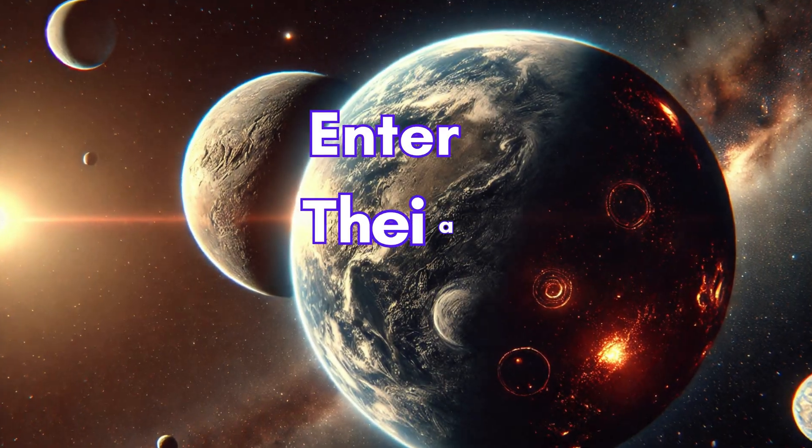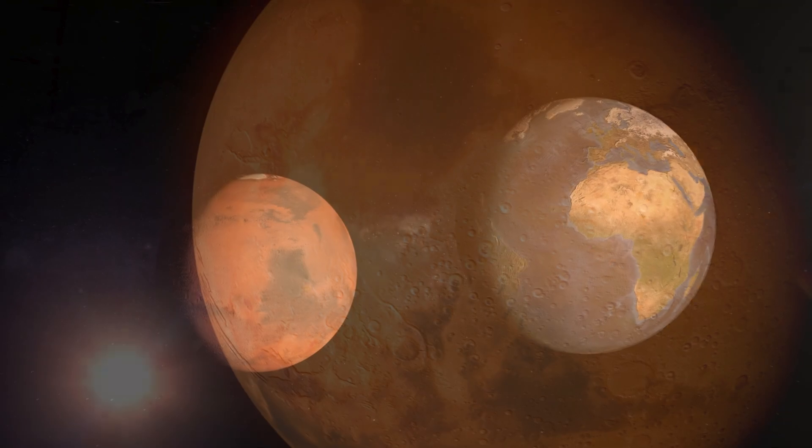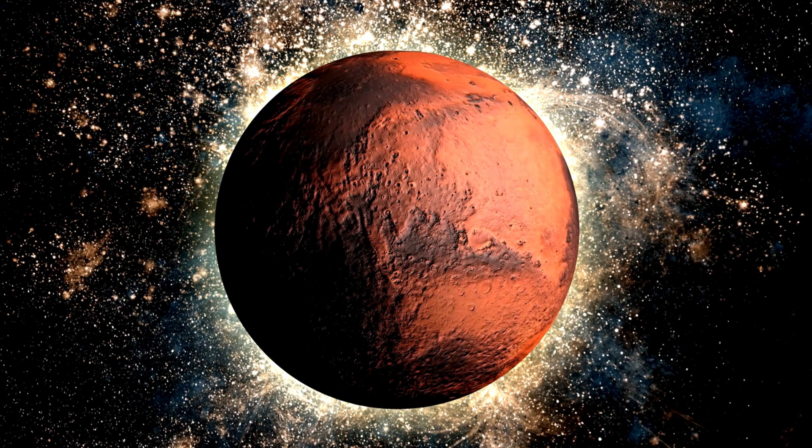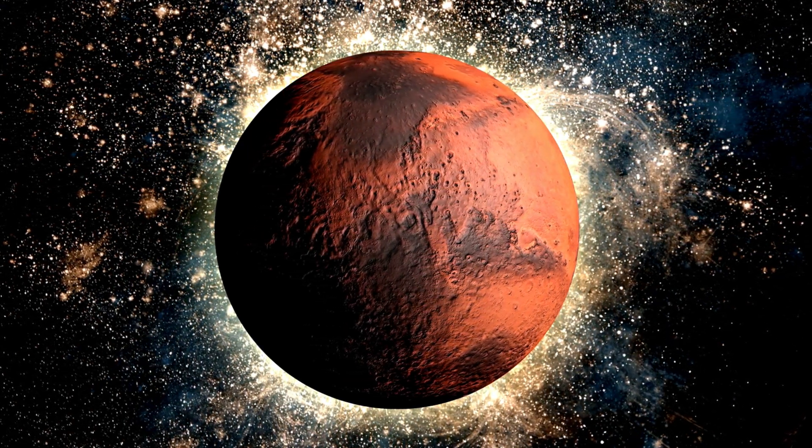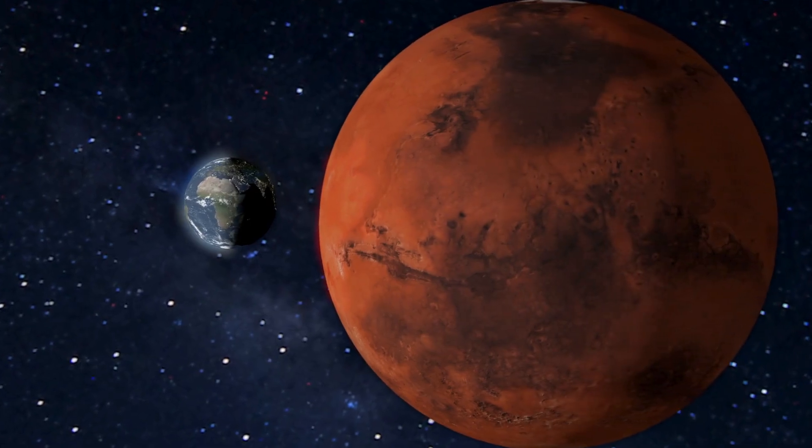Enter Theia. The rogue planet that changed everything. Now here's where things get interesting. Scientists think there was another planet hanging out nearby called Theia. Yes, they gave it a name. It sounds fancy, right? Picture Theia as Earth's long-lost cousin who decided to crash the party. Literally. Theia was roughly the size of Mars, which makes it pretty significant.